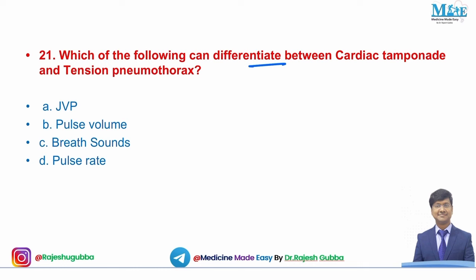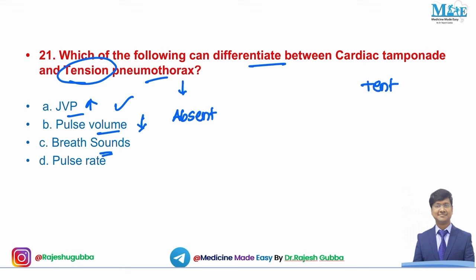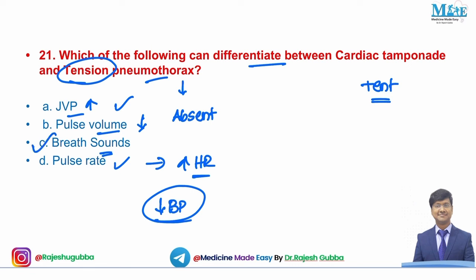Next question: which finding can differentiate cardiac tamponade from tension pneumothorax — raised JVP, pulse volume, breath sounds, or pulse rate? JVP is elevated in both. Pulse volume is reduced in both. Pulse rate shows tachycardia in both. Breath sounds are absent in tension pneumothorax but present in cardiac tamponade. Therefore, breath sounds are the differentiating factor.